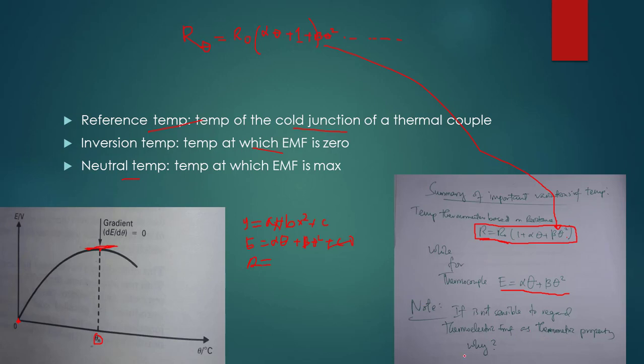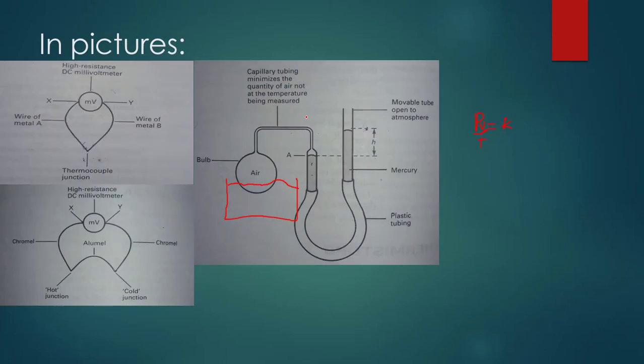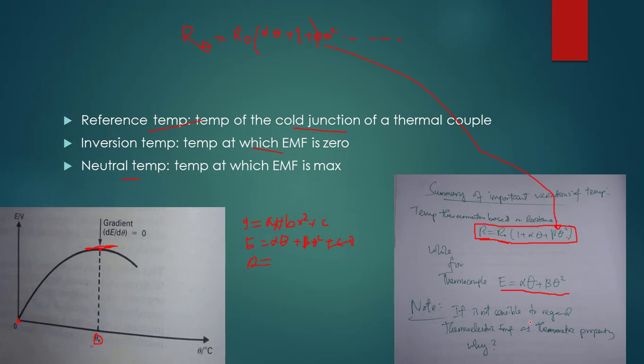It is not always sensible to regard the thermoelectric EMF as a thermometric property. Why? Because we don't have variation of EMF with temperature directly. Usually it's indirect: temperature affects resistance, which in turn affects thermoelectric EMF. The actual thermometric property, according to our definition, must vary with temperature and whose variation corresponds to temperature changes for measurements. In real sense, what corresponds to temperature change is resistance, not the EMF.